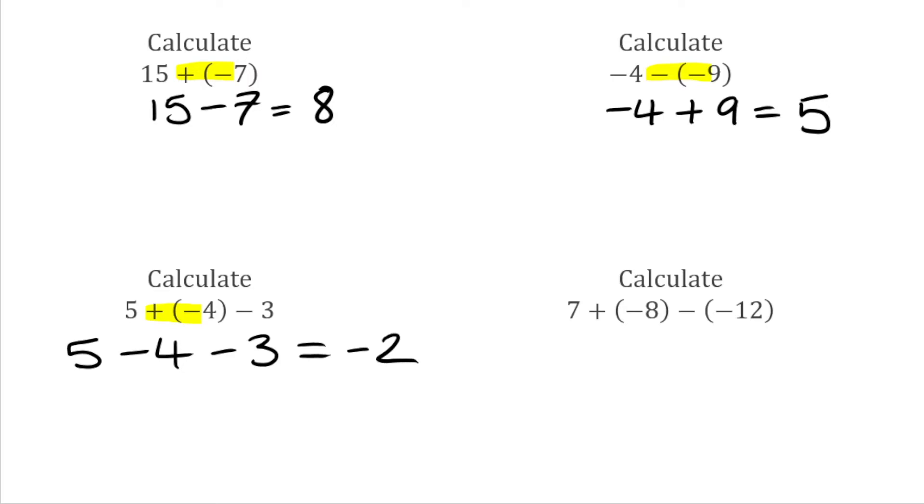For this final example, we have 7 plus negative 8, then take away negative 12. We've got two double signs this time. First, 7 plus negative 8 - opposite signs, so that's 7 take away 8. Then we have take away negative 12 - a negative and a negative make a positive, so that's plus 12. Seven take away 8 is negative 1, but then when we add on the 12, that gives us 11.